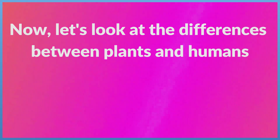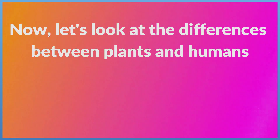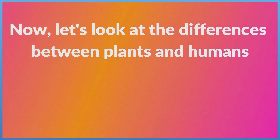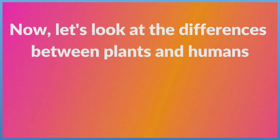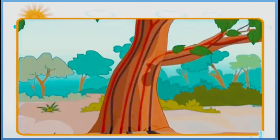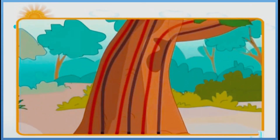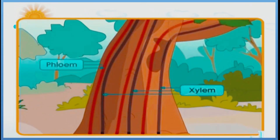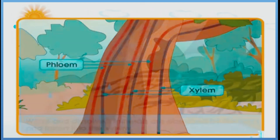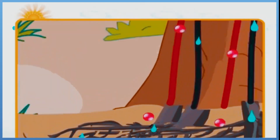Now let's look at the differences between plants and humans. The transport system in plants is a system of tubes called xylem and phloem that transport different materials around the plant parts.